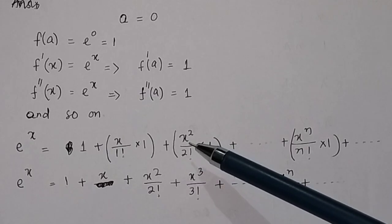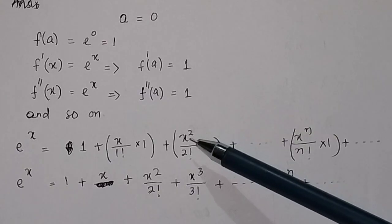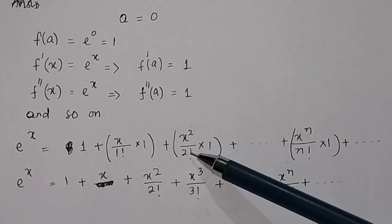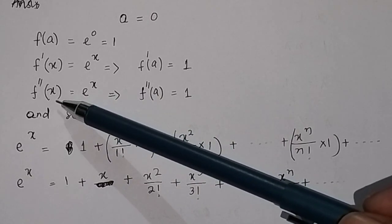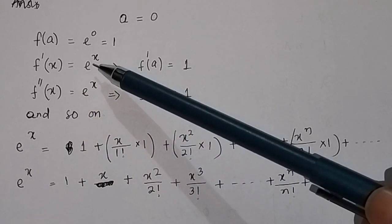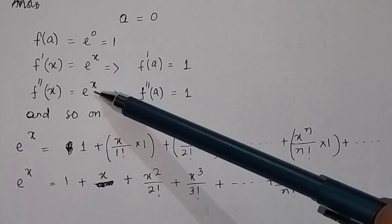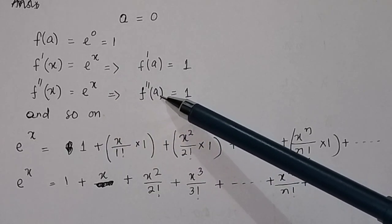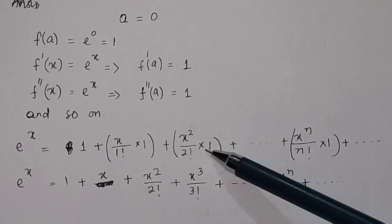The third term is (x minus a) squared divided by factorial 2, times the second derivative of the function. The second derivative of e^x is e^x. Putting x = 0 gives 1. So the second derivative at x = 0 is 1, making the third term x squared divided by factorial 2.